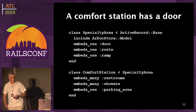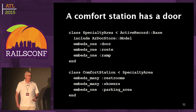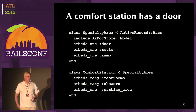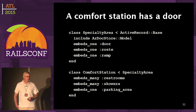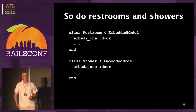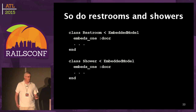Here we have a comfort station that has a door. A lot of things have a door, so I used single table inheritance for a specialty area — which is what a comfort station is called. Every specialty area gets the things that most everything seemed to have. A comfort station doesn't explicitly have a door — it just got one from specialty area. But restrooms and showers also have doors. Wherever a door needed to be, it was as simple as writing embeds_one or embeds_many :doors — or :restroom, :parking_area, :ramp, :elevator, :stairway. And so forth.